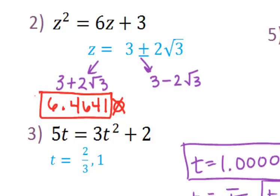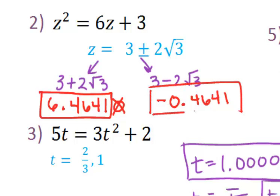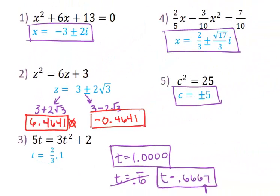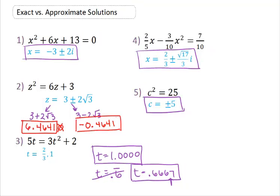We have to do the other solution as well. Almost the same as last time, but when we type it in our calculator, it's 3 minus 2 times the square root of 3. The answer gives you negative 0.4641 and so forth — no rounding on this one either. So there are our approximate answers to these problems.